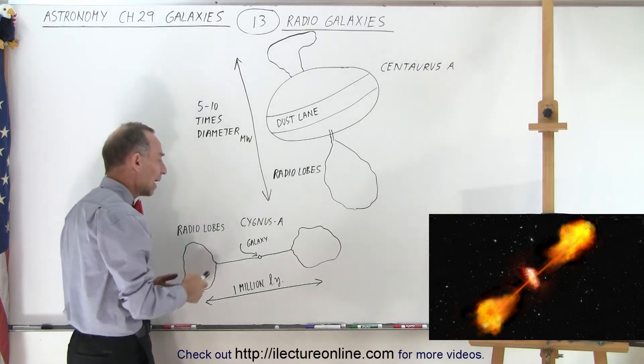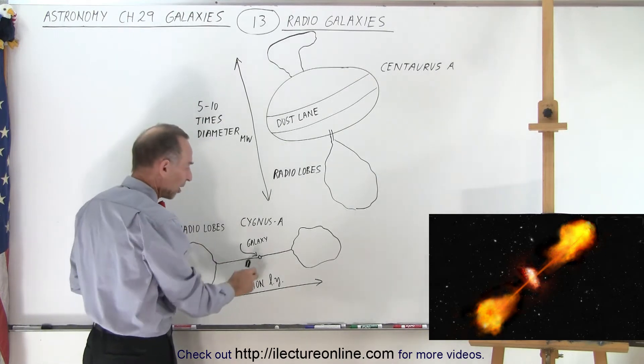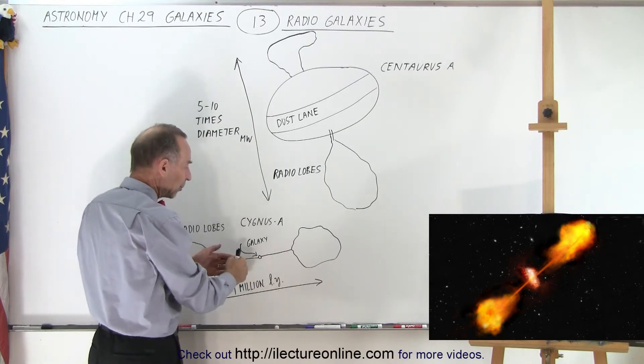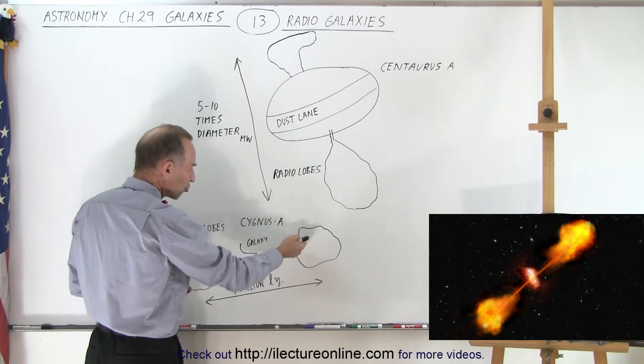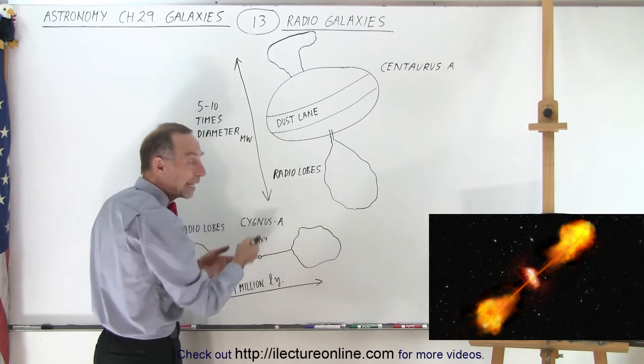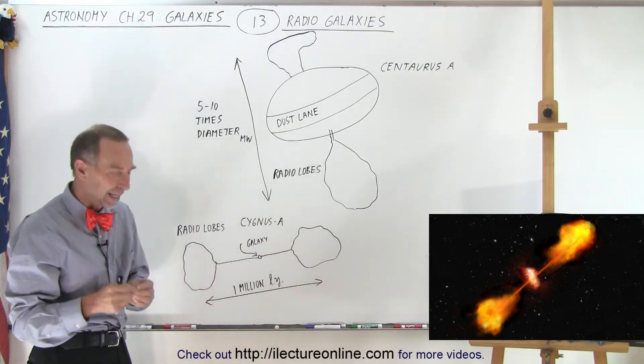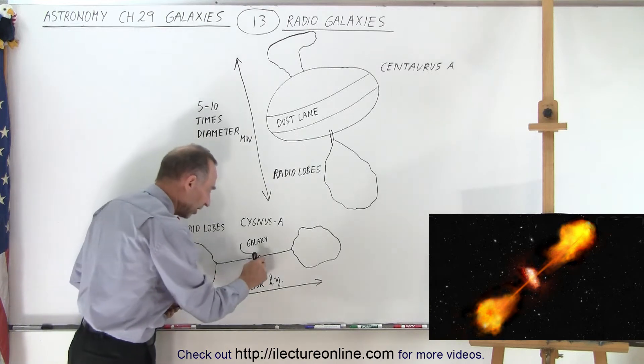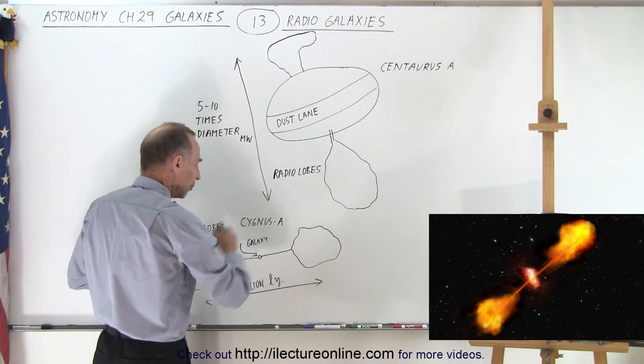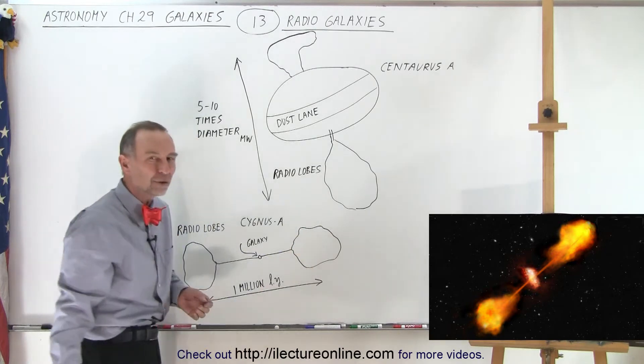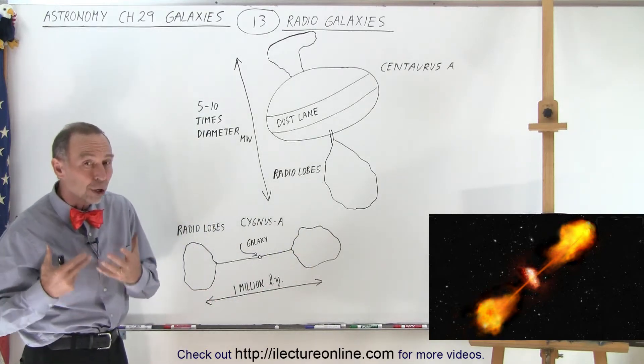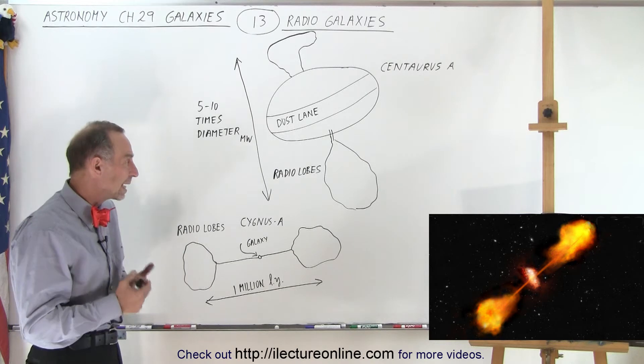And then when we looked at Cygnus A, we had a similar result. We saw the galaxy at the very center, and then we saw these two radio lobes far away from the galaxy with streams of particles emanating from the center of that galaxy. Notice the small size of the galaxy compared to the size of the radio lobes. The radio lobes were like a million light years apart, putting out enormous quantities of radio radiation.